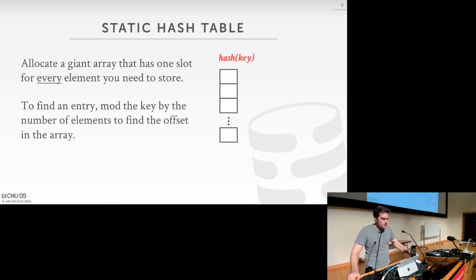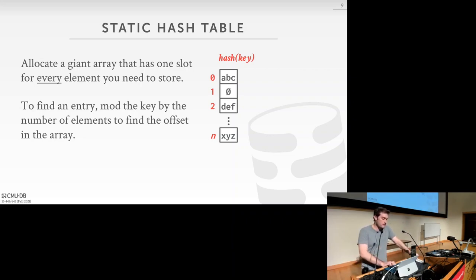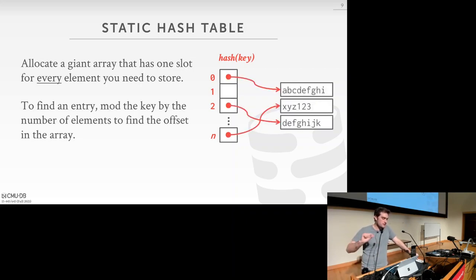The easiest basic hash table is to allocate a giant array with one slot for every key you want to store. Think of the keys as integers between zero and N. You can slot each key into an individual slot by modding the key by the number of elements and finding the offset in the array. For example, with strings like ABC, DEF, and so on — the hash of the key modded by the number of elements gives the offset we're looking for.